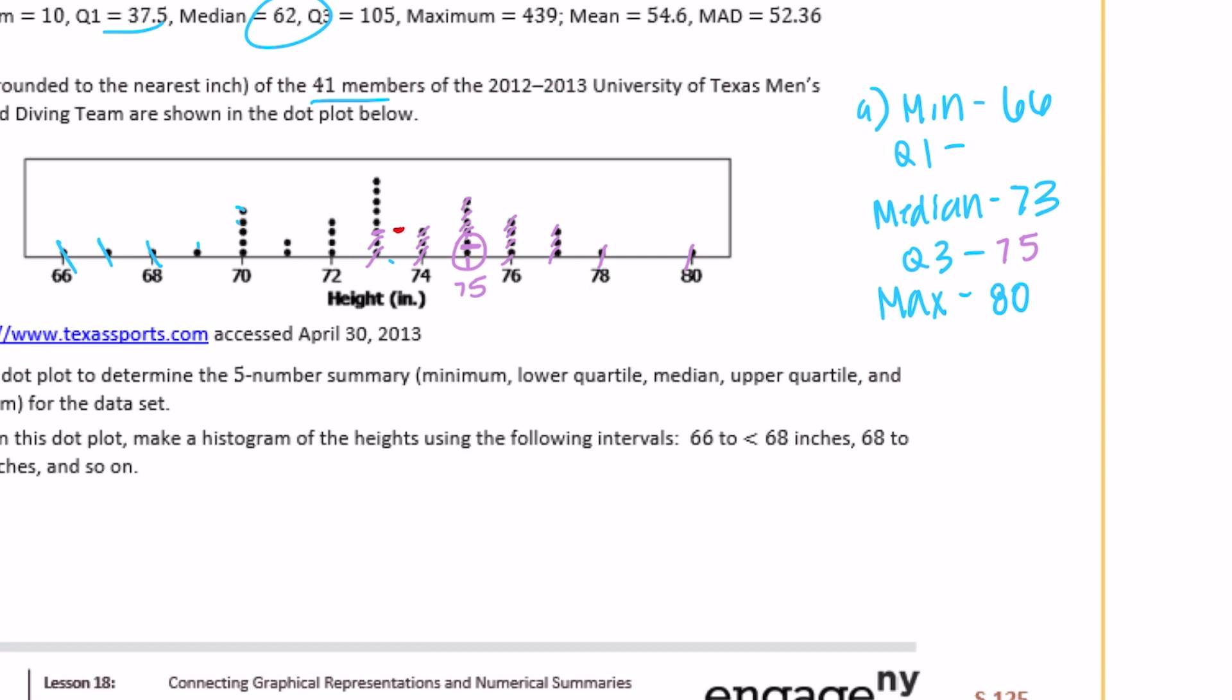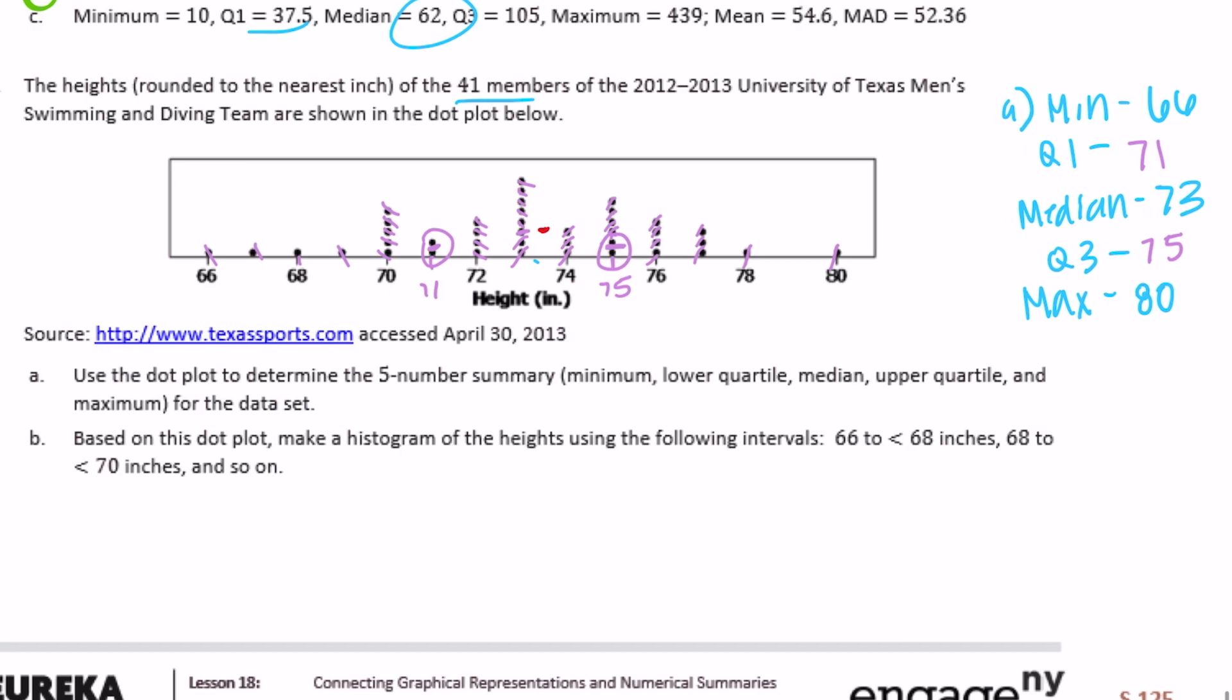Let's find quartile 1. Finding the median of the first half, so cross off 1, 2, 3, 4, 5. Let's do 3: 1, 2, 3. And then 1. So we're left with these two but the middle of them is just 71, so 71. There's our 5-number summary.